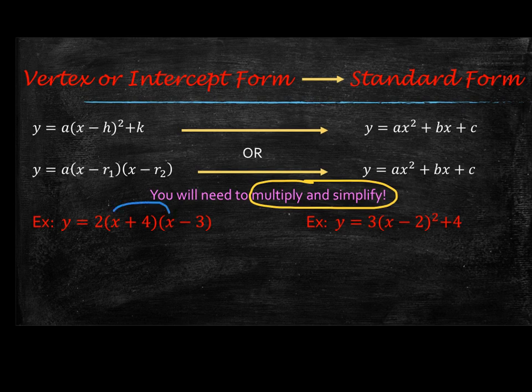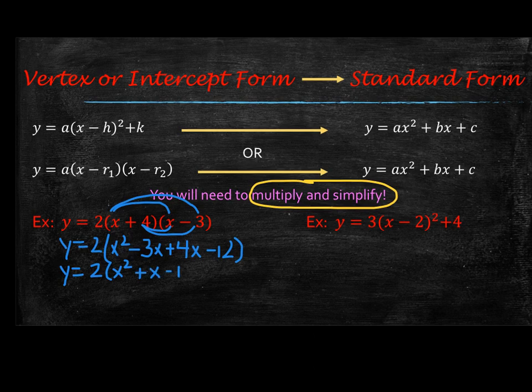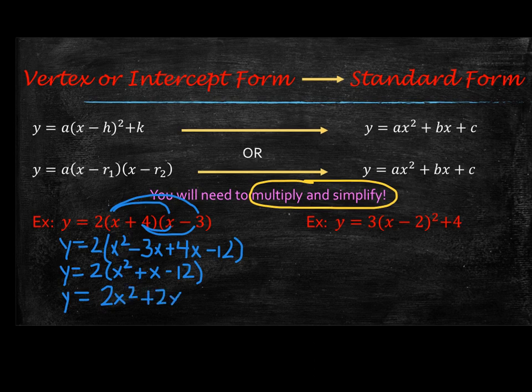Now I tend to multiply the factors together first, so the parentheses. So I'm going to do x times x. I'm just going to bring down the y equals 2 as I'm doing this. x times x is x squared. Then you'll do x times a negative 3, which would be a negative 3x or minus 3x. Then you would take your 4 and distribute it through, so positive 4x, and then 4 times negative 3 would be that minus 12. Go ahead and simplify further by collecting like terms. So y equals 2 times x squared plus x minus 12. And now last but not least, distribute the 2. So this would be y equals 2x squared plus 2x minus 24. And there you go. Now it is in standard form.